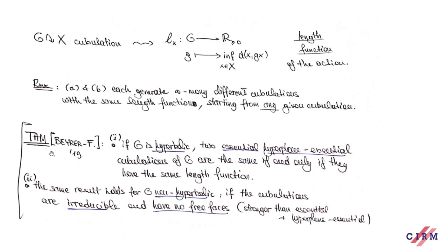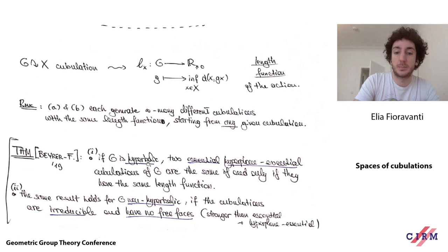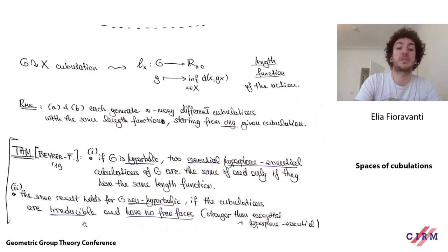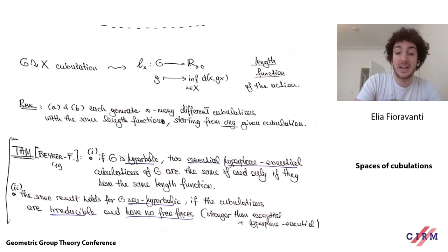If we restrict to essential and hyperplane-essential things, things are much better behaved. Here's something proved with Jonas Beyrer last year. First: if the group G is Gromov hyperbolic and cubulated, then two essential, hyperplane-essential cubulations of G are the same if and only if they have the same length function. Second: if you look at non-hyperbolic groups, the same result holds — two cubulations are the same if and only if they share the same length function — as long as you consider cubulations satisfying some additional assumptions: they should be irreducible (not split as a product), and they should have no free faces, i.e., the CAT(0) metrics should be geodesically complete. Having no free faces implies essentiality and hyperplane-essentiality, but it is a stronger assumption.